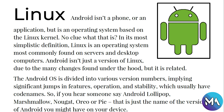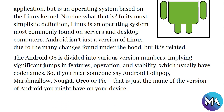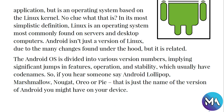Now that we have learned that Android is Linux-based, the Android OS is divided into various versions and numbers implying significant jumps in features, operations, and stability, which usually have code names. In later videos we will learn about the history of Android. So if you hear someone say Android Lollipop, Marshmallow, Nougat, Oreo, Pie, or Android 10 — that's just the name of the version of Android you might have on your device.